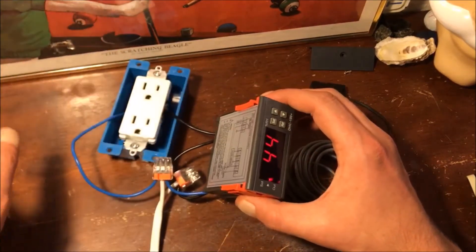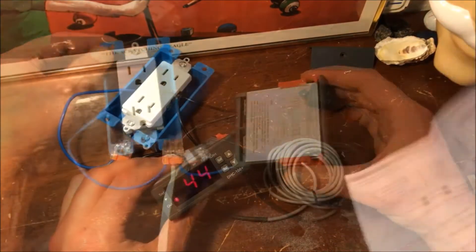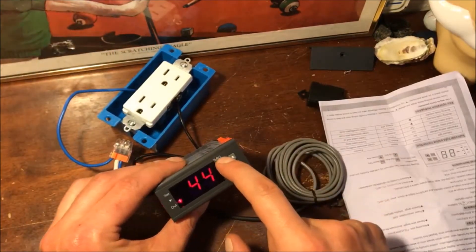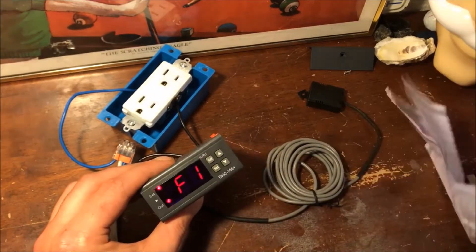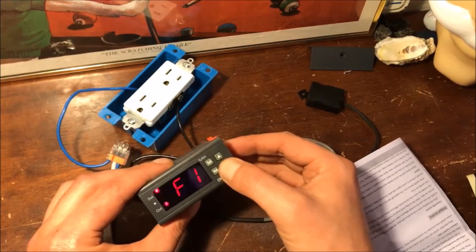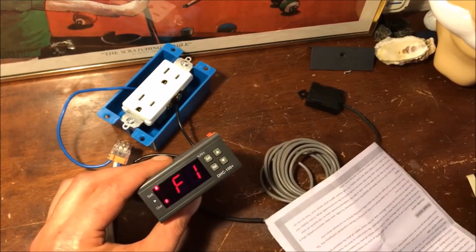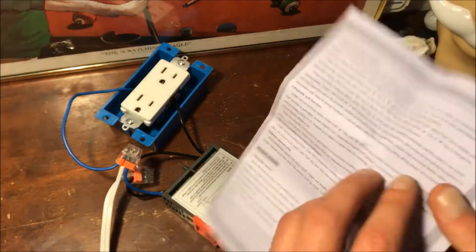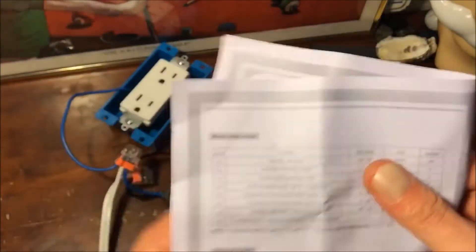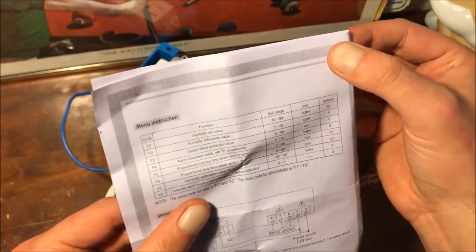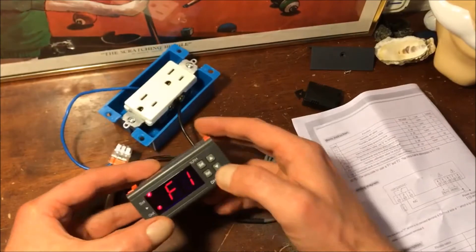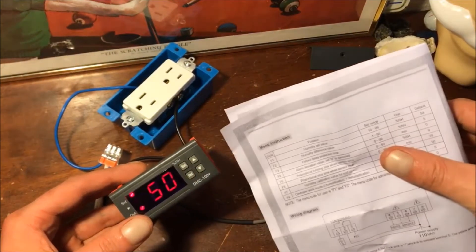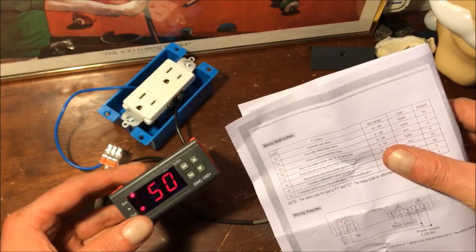Okay, there you go! With the previous one on the temperature, you hold the set, this top button. Okay, there you go, so we have F1, F2.